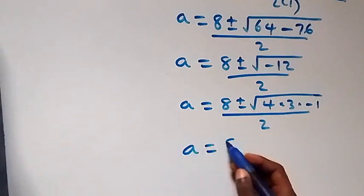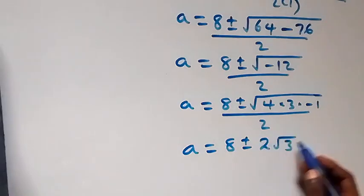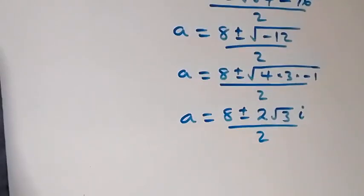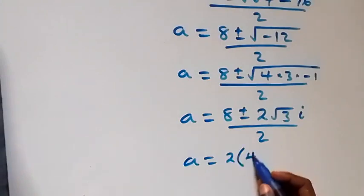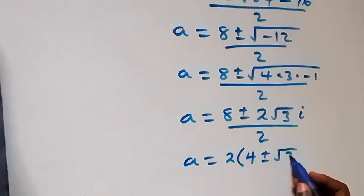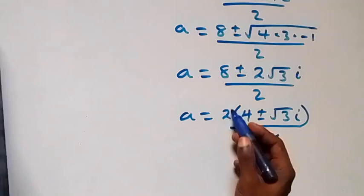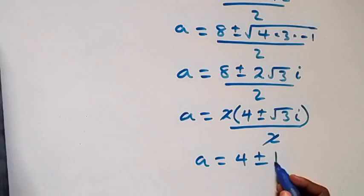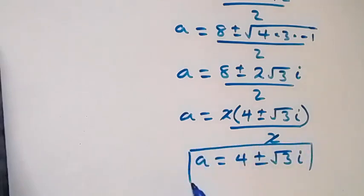Separating this, we have a equals to 8 plus or minus root 4, that is 2, times root 3, times root minus 1, that is i, over 2. Since 2 is common up top, we have a equals to 2 times (4 plus or minus root 3 i) over 2. The 2s cancel each other, so a equals to 4 plus or minus root 3 i. That gives us 2 complex solutions from here.